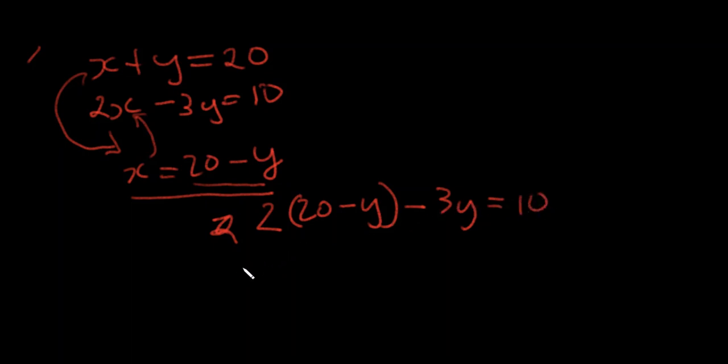Now, let me just expand this bracket. So 2 into 20 is 40 minus 2y minus 3y is equal to 10, which is basically 40 minus 5y is equal to 10. Then we just scroll down a bit here.